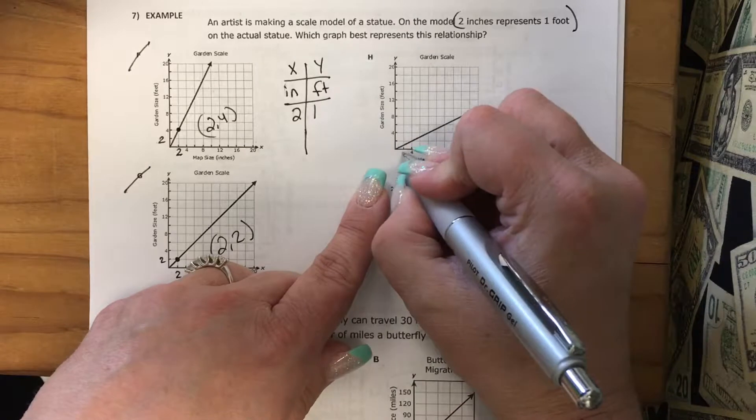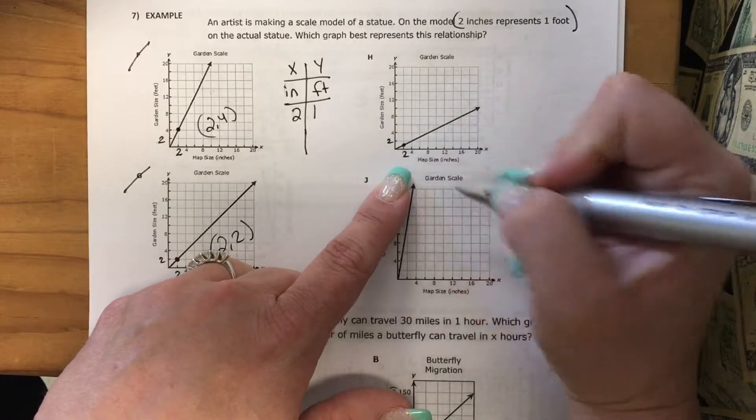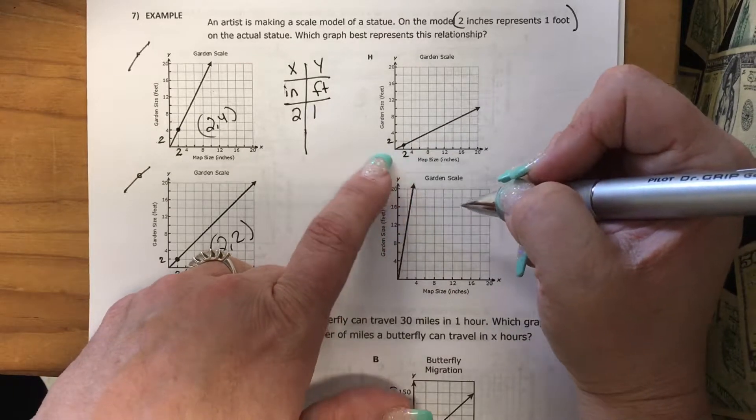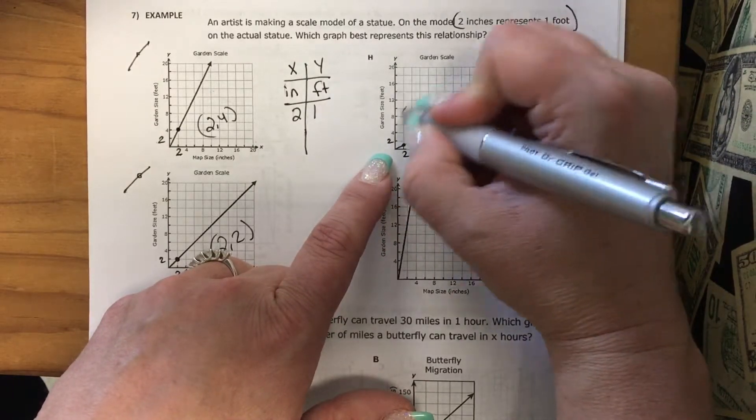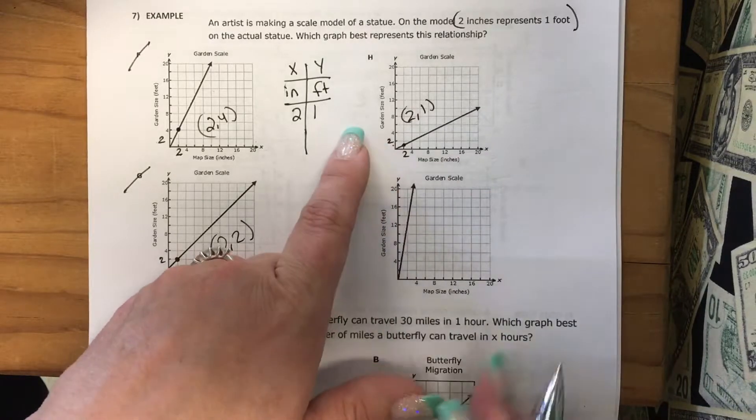So here's my 2. Here's my 2. When I'm at 2, I'm coming up and I'm not quite going into the 2. So it looks like this is 2, 1. Because I'm going halfway between 0 and 2. So H is a good possibility.